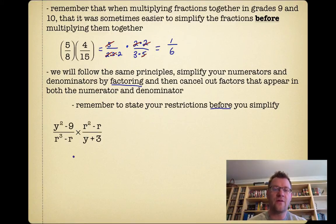Here's our example: (y² - 9)/(r³ - r) times (r² - r)/(y + 3). You're going to want to factor first. Always factor these things out first. The top part is a difference of squares: (y - 3)(y + 3).